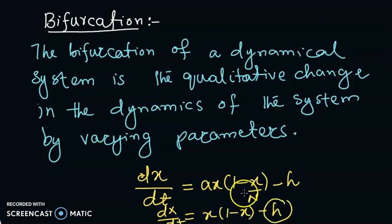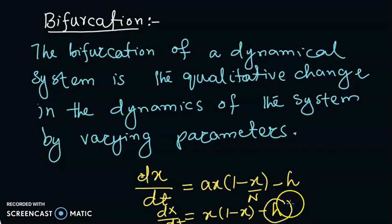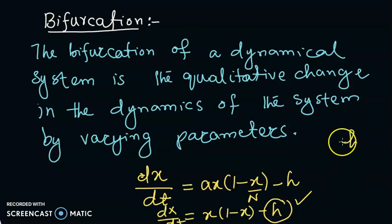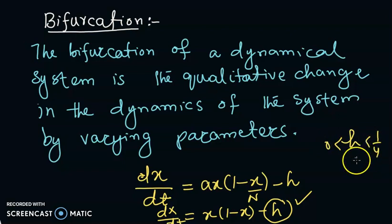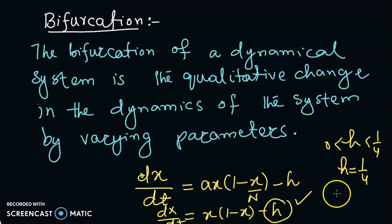By changing the parameter h, we were observing the qualitative changes in the dynamics of this system. We had seen that for h between 0 and 1/4 there was different behavior, and at h equal to 1/4 there was different behavior, and for h greater than 1/4 we had something else in the dynamics of the dynamical system.